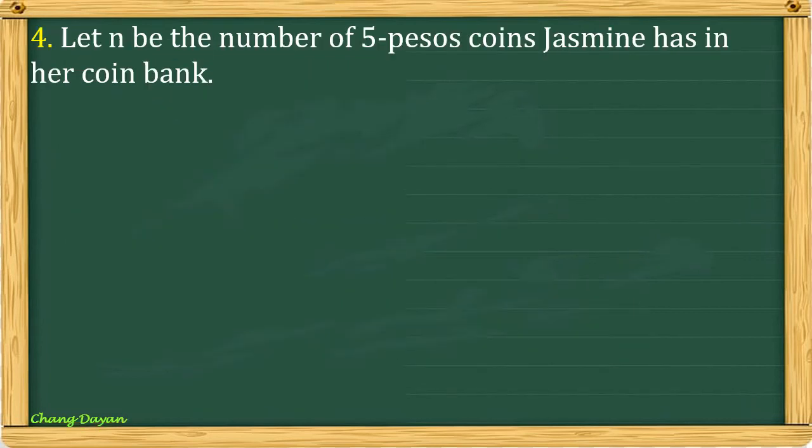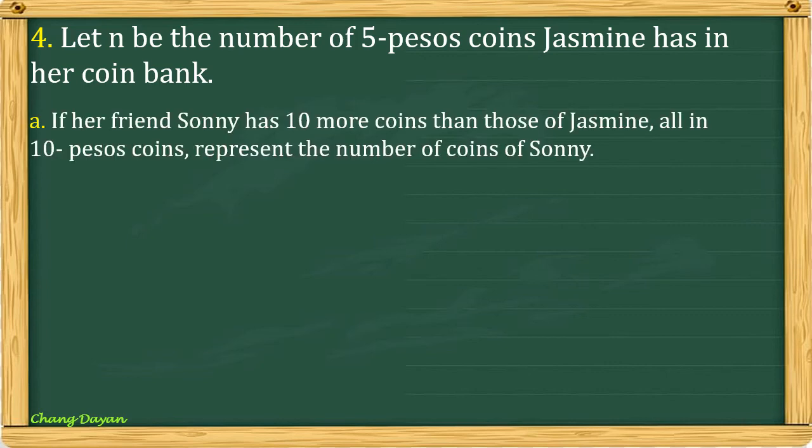Number 4, let N be the number of 5 pesos coins Jasmine has in her coin bank. For letter A, if her friend Sonny has 10 more coins than those of Jasmine, all in 10 pesos coins, represent the number of coins. So as we all know, N is the number of 5 pesos coins of Jasmine.